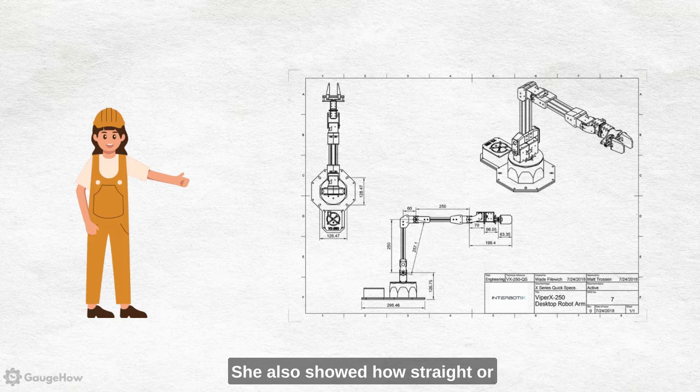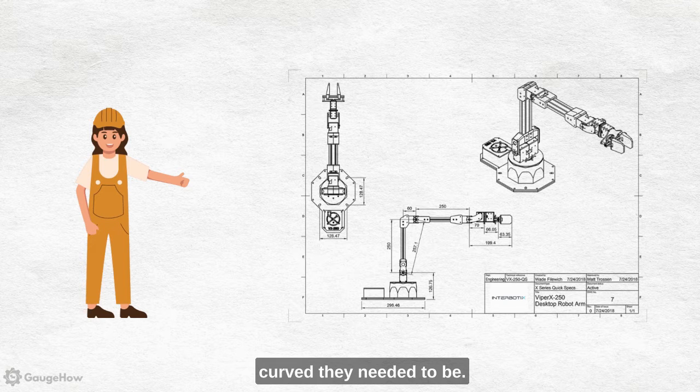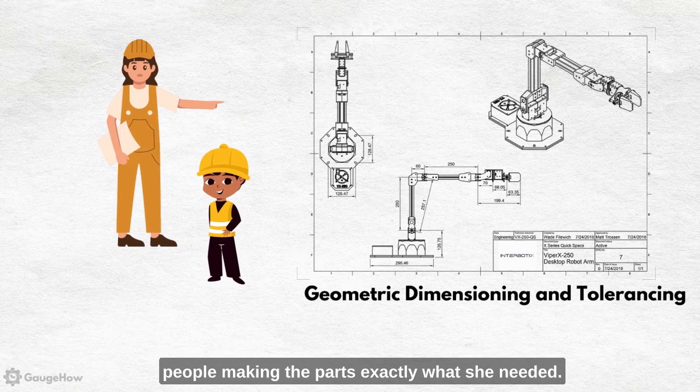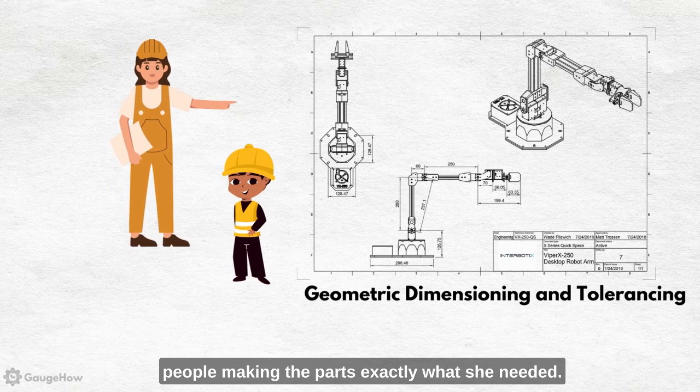She also showed how straight or curved they needed to be. By using GD and T, Emma could tell the people making the parts exactly what she needed.